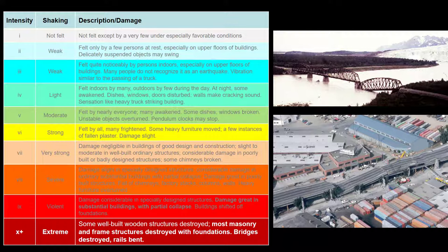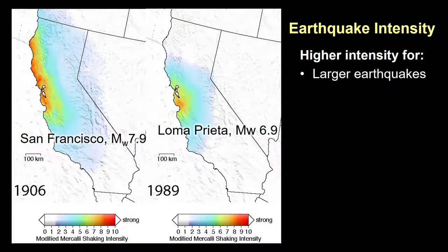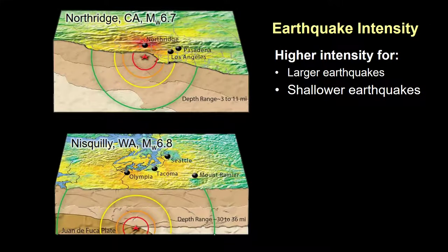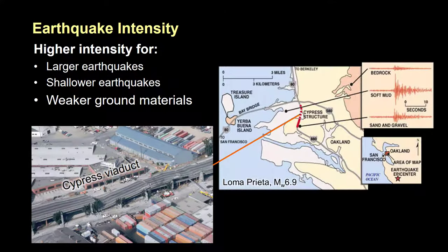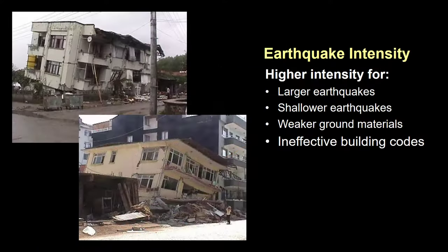Because the damage varies with distance from the earthquake and with a variety of local factors, there will be multiple intensity values for any given earthquake. Intensity values will be higher and more wide-ranging for larger earthquakes — for example, the San Francisco earthquake was felt much further afield than the smaller Loma Prieta earthquake. Given two earthquakes of similar size, the shallower earthquake will cause more damage and produce higher intensity values. Areas underlain by weaker ground materials will experience more shaking, greater damage, and higher intensity. For example, the Cypress Viaduct in Oakland collapsed on those sections located over soft muds that served to exaggerate earthquake shaking during the Loma Prieta earthquake. Lastly, earthquake-prone regions often have building code regulations in an effort to minimize damage, but the enforcement of these regulations may not be consistent, resulting in greater damages and higher intensity values in some regions.